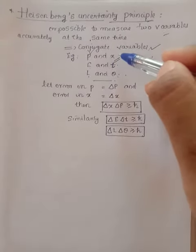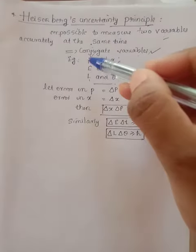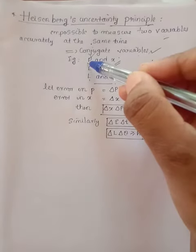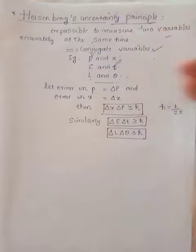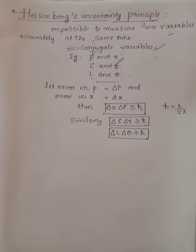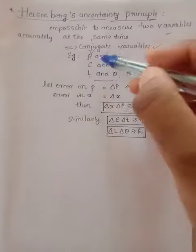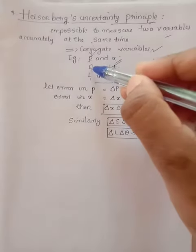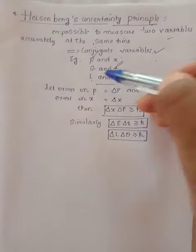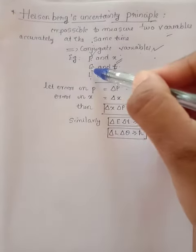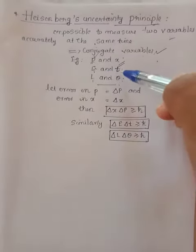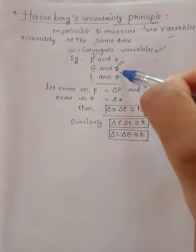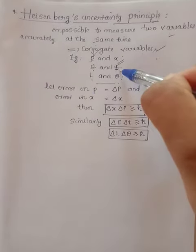Suppose we are measuring the position accurately, then there will be an error in momentum automatically. That is the concept of Heisenberg's uncertainty principle. Similarly, for energy and time, and angular momentum and theta — suppose we are measuring the energy very accurately, then there will be an error in the measurement of time, and vice versa.